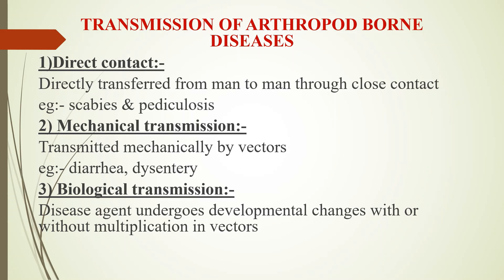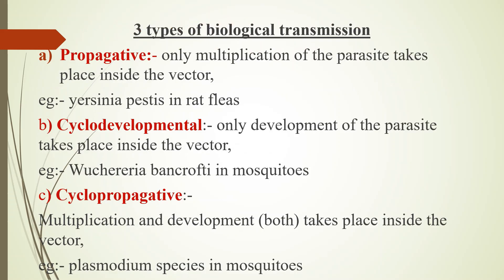Third, biological transmission — disease agent undergoes developmental changes with or without multiplication in vectors. Biological transmission is again classified into three types: propagative, cyclo-developmental, and cyclo-propagative.